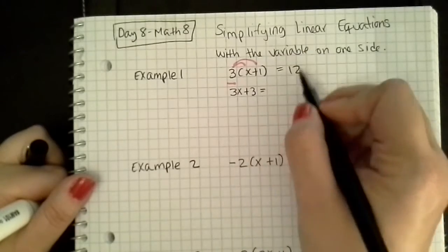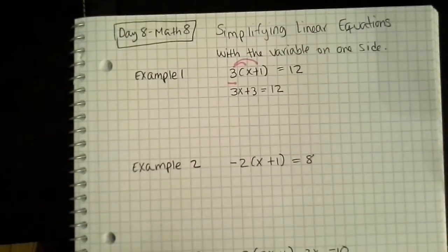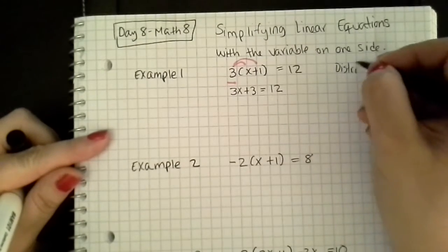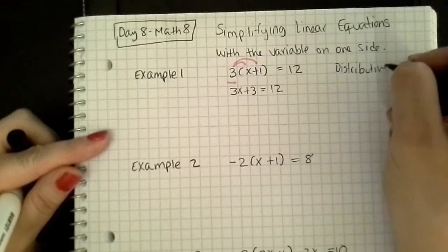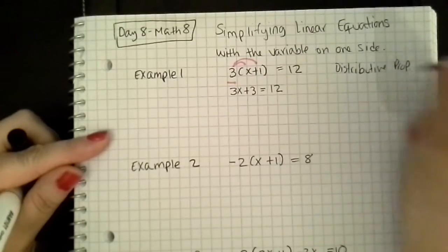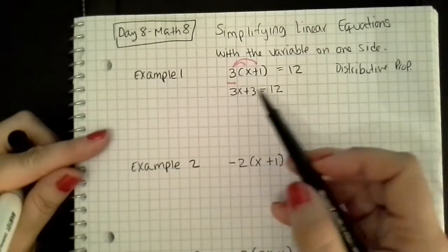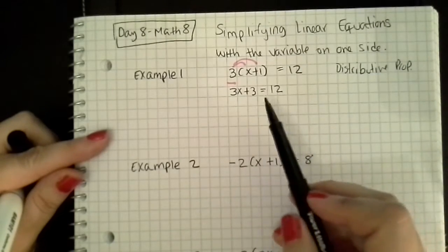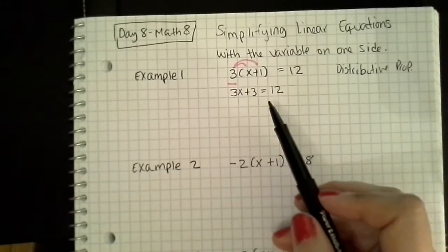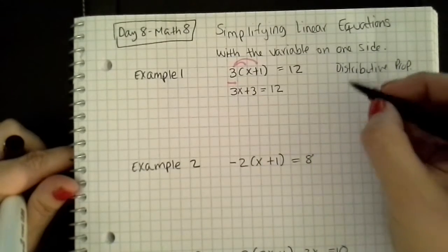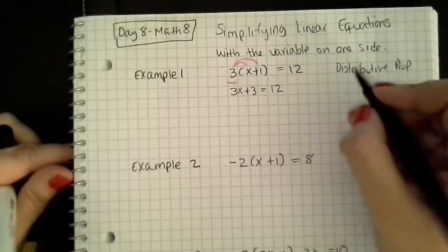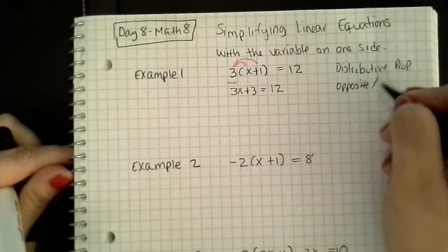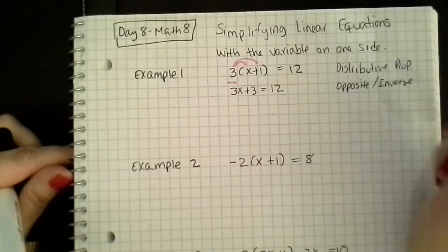Bring the equal sign down and the 12. Now the next thing I'll do — and I'm going to write down what I did — use the distributive property. Then I'm going to see if I have any like terms. I noticed that I don't have any like terms, so I'm not going to combine any like terms, because I have none. So I will move on to the next step in our presentation, which tells us to use the opposite or inverse operations.